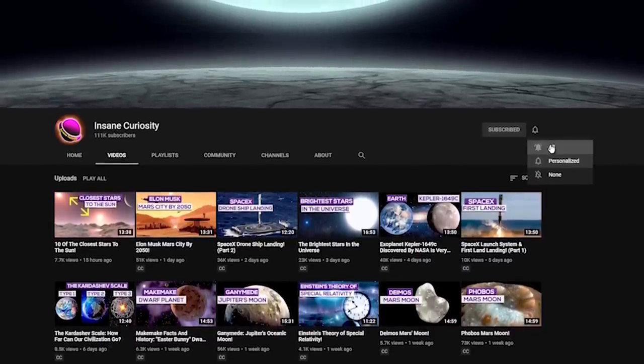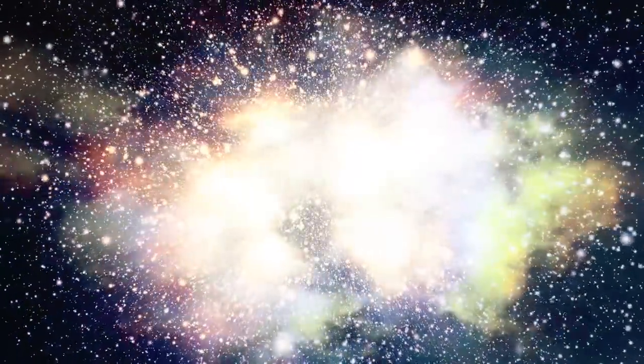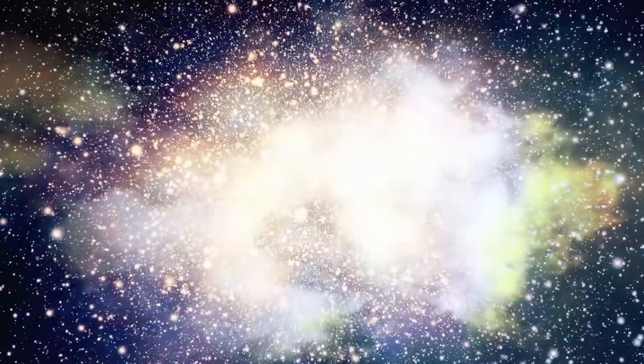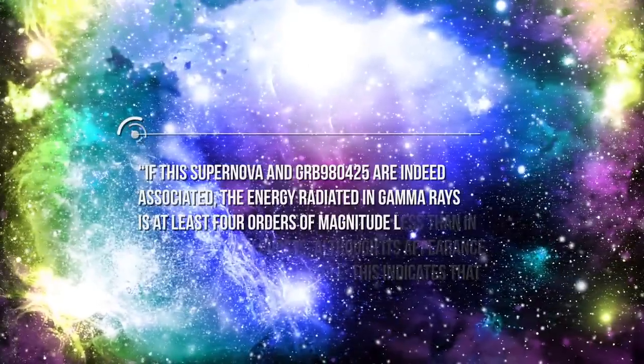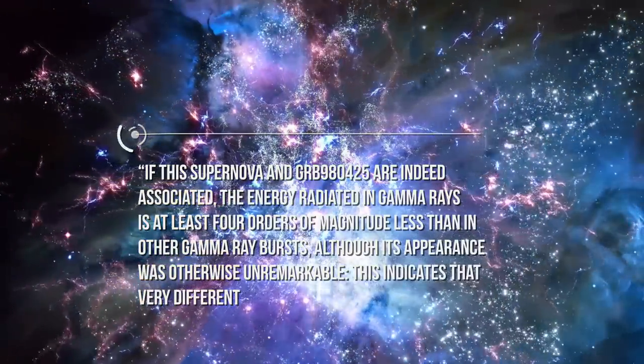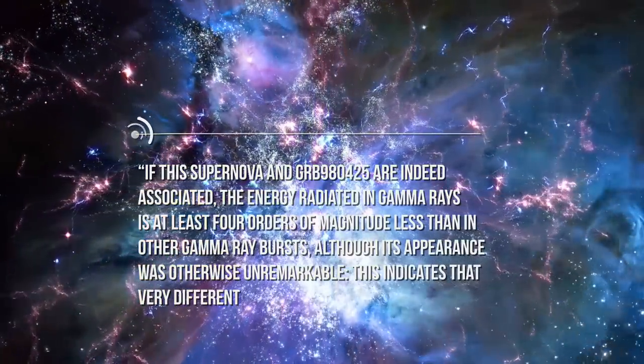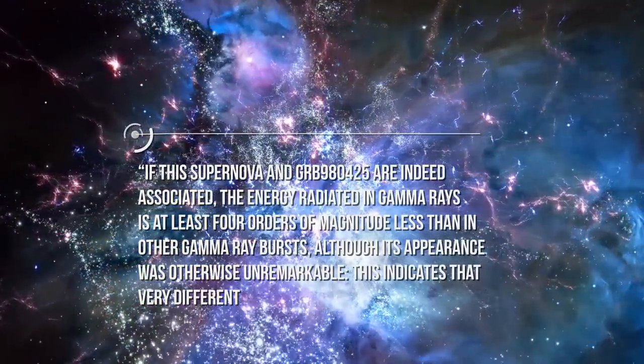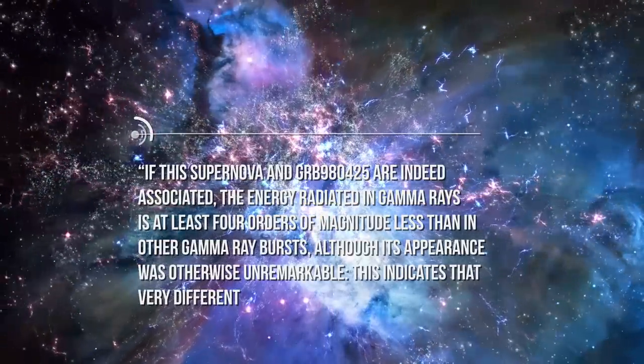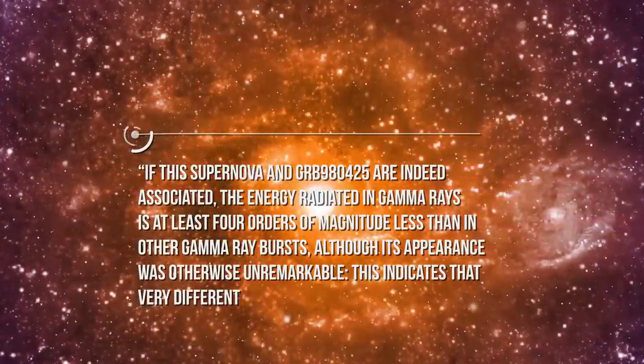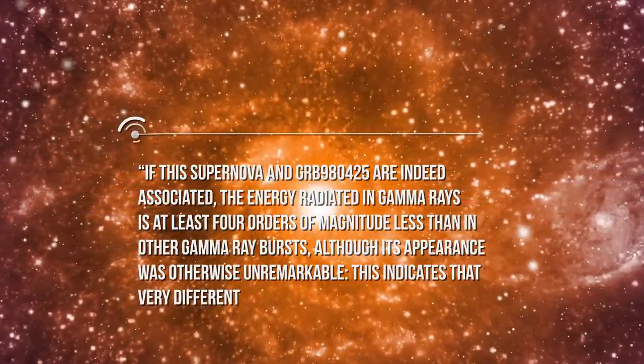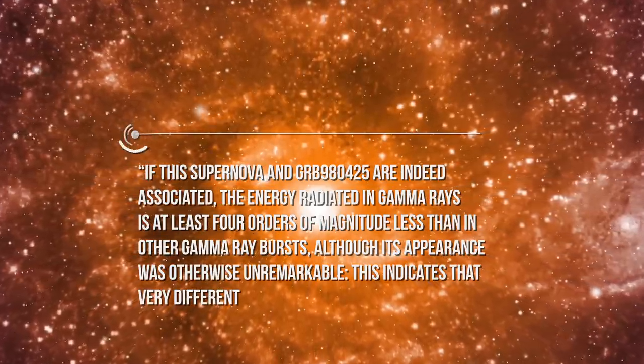GRB 980425 was unusual, and perhaps was not functionally equivalent to the explosions seen at cosmological distances. Giving a flavor of this resistance, in Iwamoto's Nature article, he says, if this supernova and GRB 980425 are indeed associated, the energy radiated in gamma rays is at least four orders of magnitude less than in other gamma ray bursts, although its appearance was otherwise unremarkable. This indicates that very different mechanisms can give rise to gamma ray bursts.